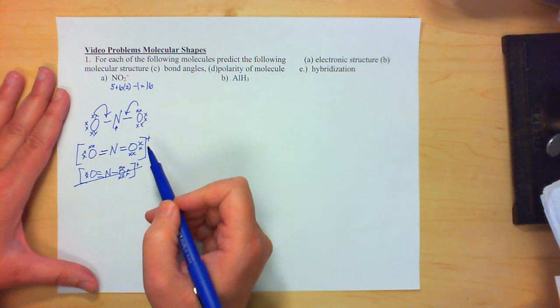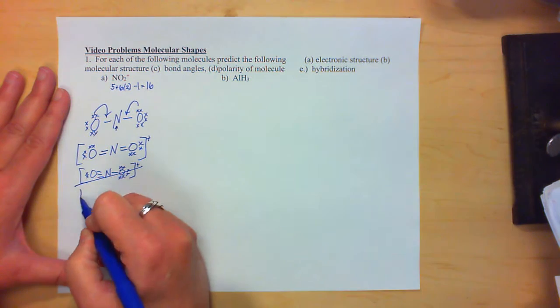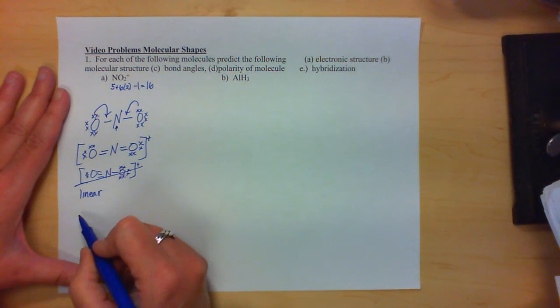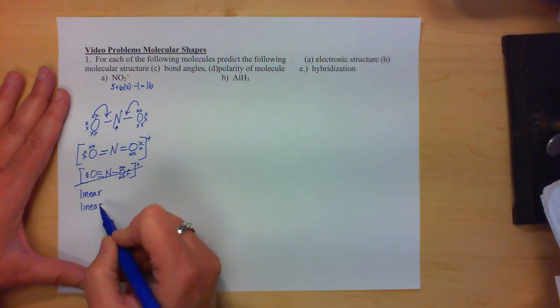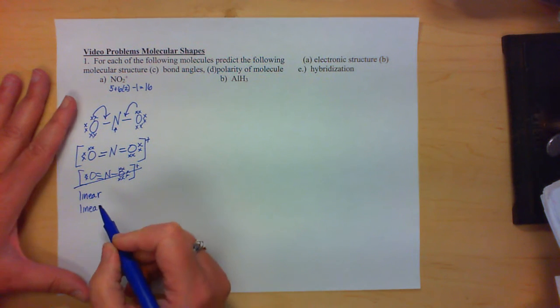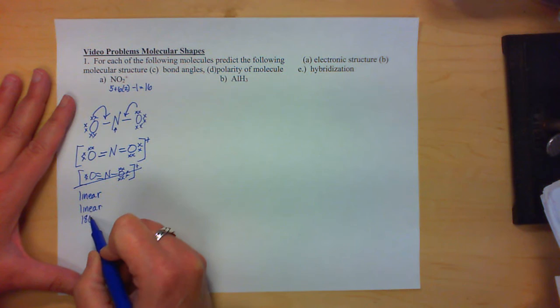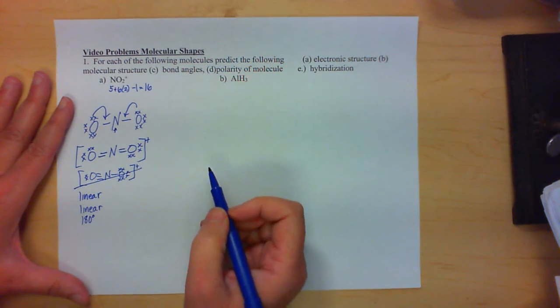You're still going to have two electron regions around nitrogen, which will give us the electronic shape as linear. And then the molecular shape, we still have only two regions, so it's linear as well. Then the bond angles, well if it's linear, all the bond angles are going to be 180 degrees.